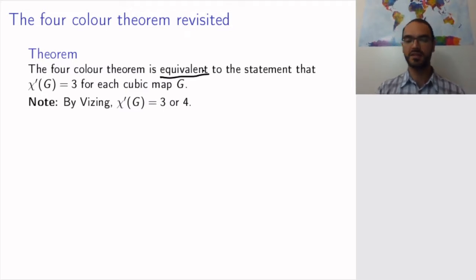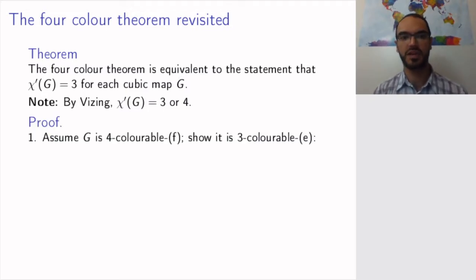And this is indeed helpful, because if you know that some theorem you're struggling with is equivalent to a theorem whose proof is known, then you know that your theorem is true. So, let's go on and prove it. We need to prove two directions. We need to prove that a cubic map G is 4-colorable F, if and only if it is 3-colorable E. So, let's first assume that we are dealing with a map, and it is 4-colorable F, and we need to show that it is 3-colorable E.